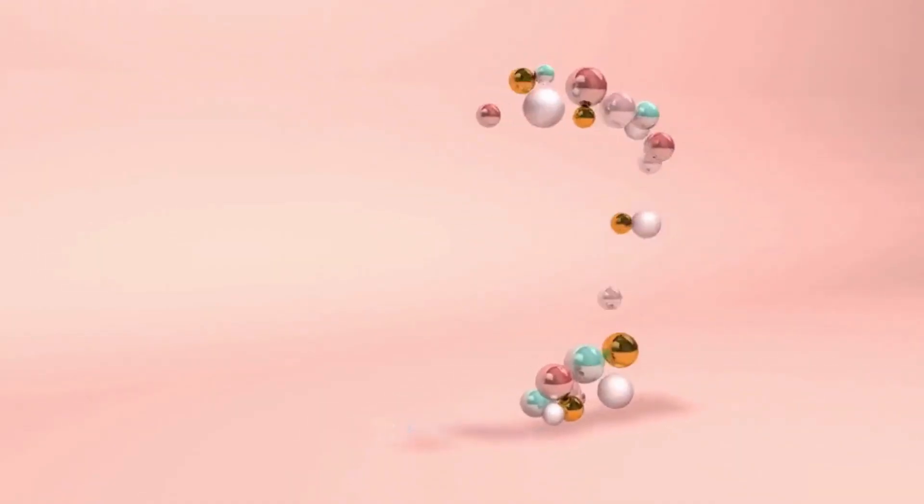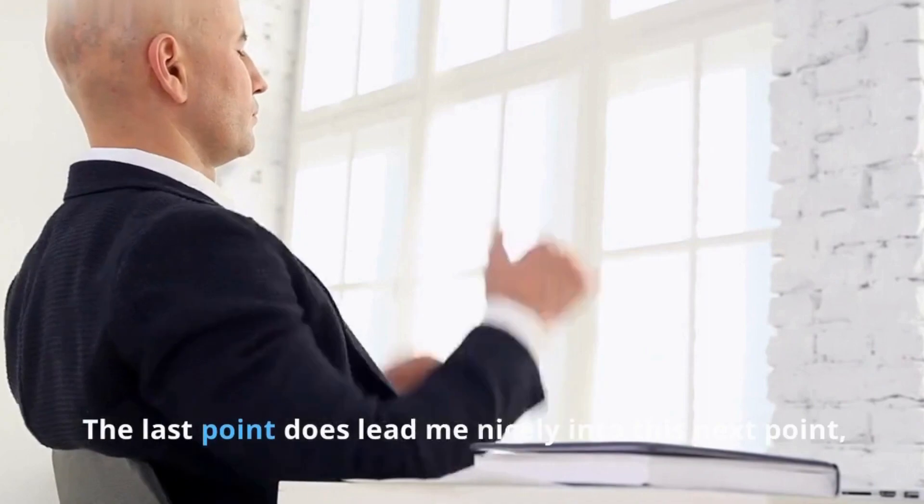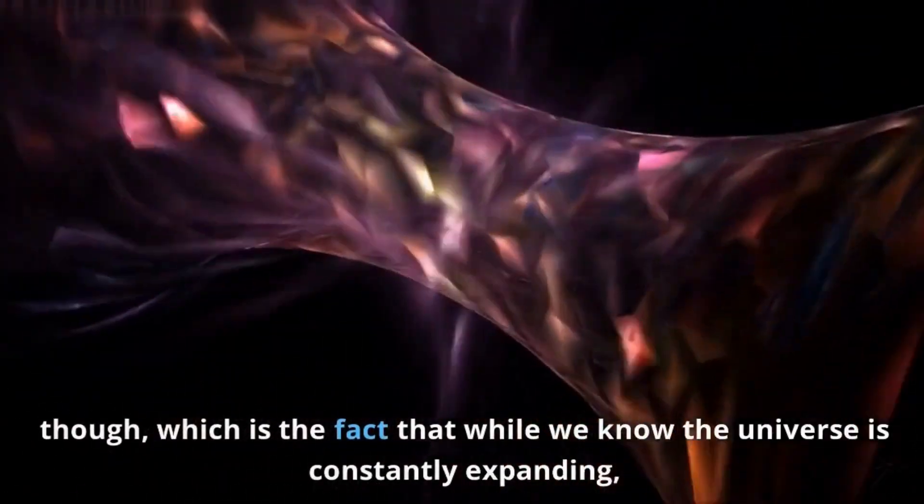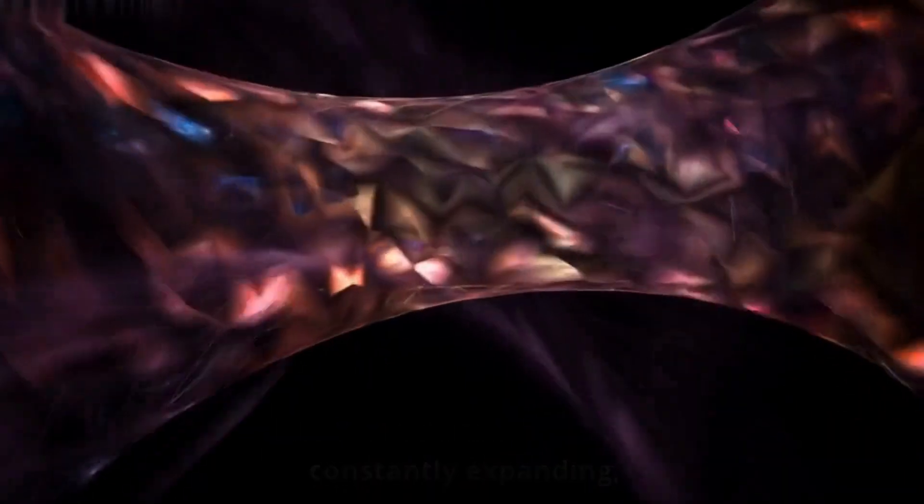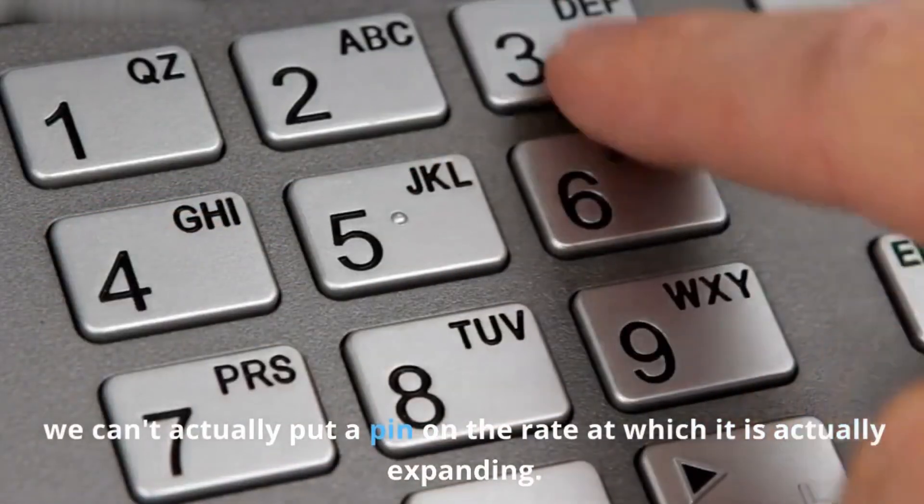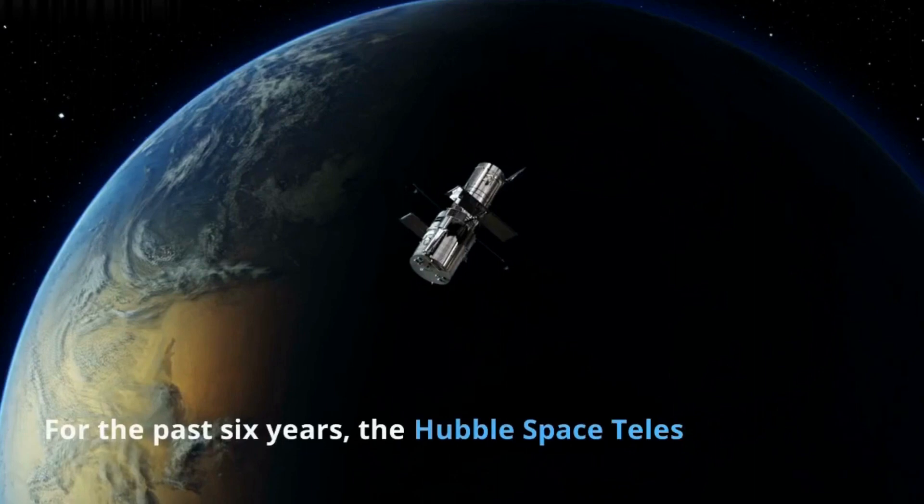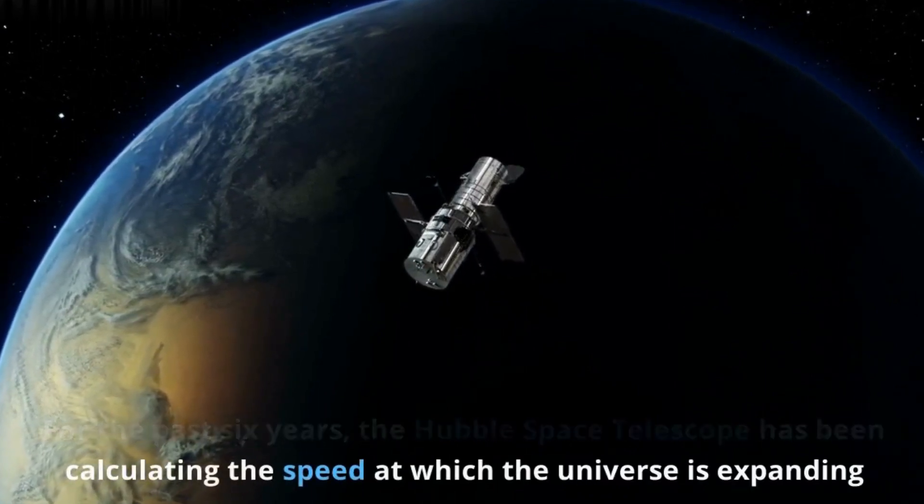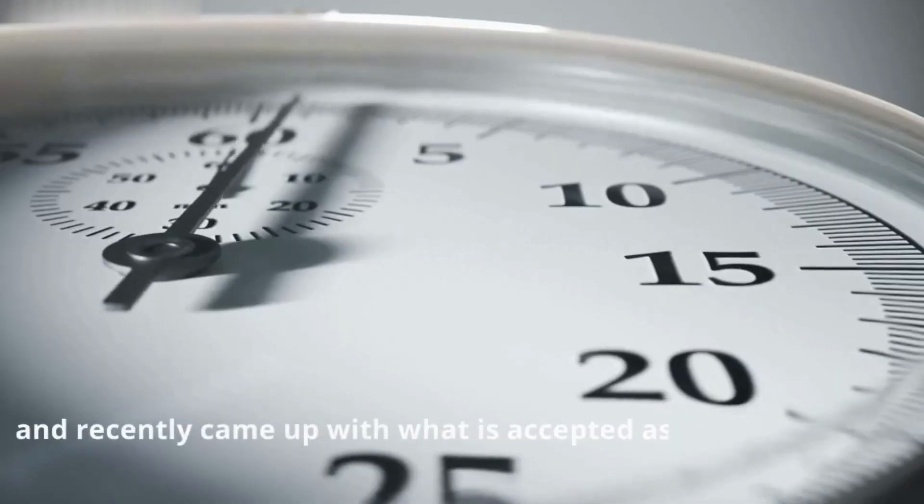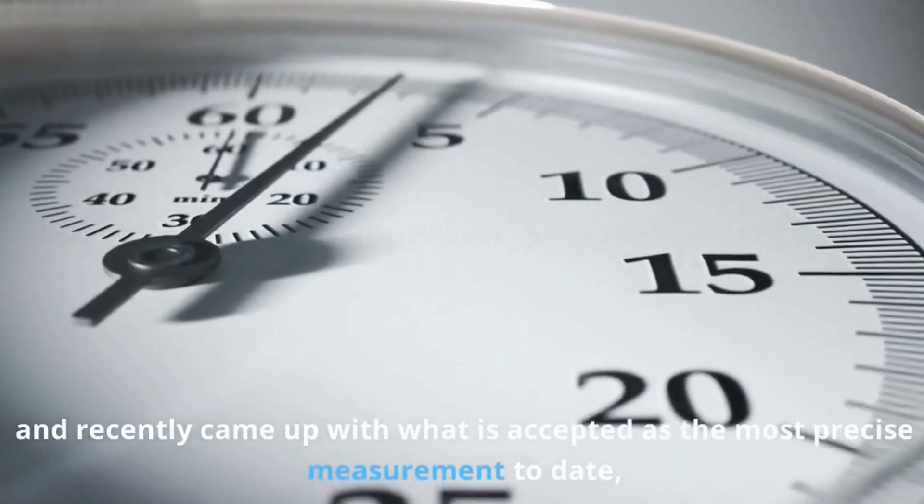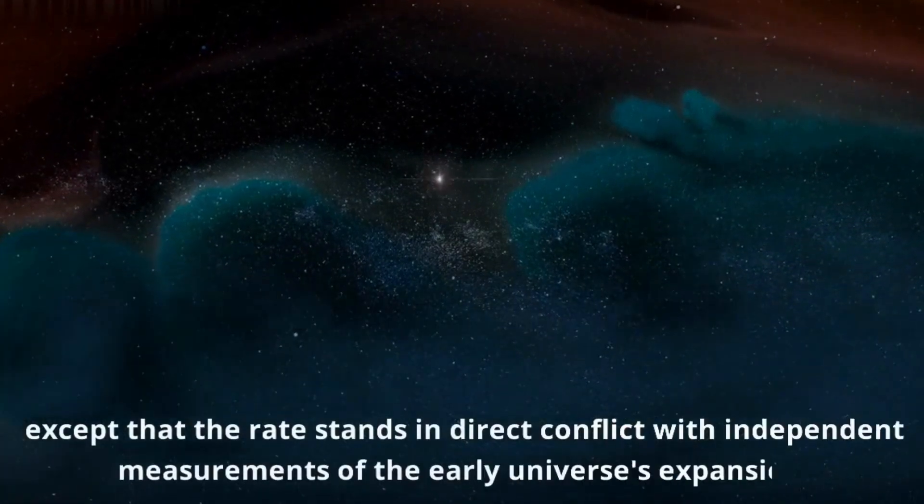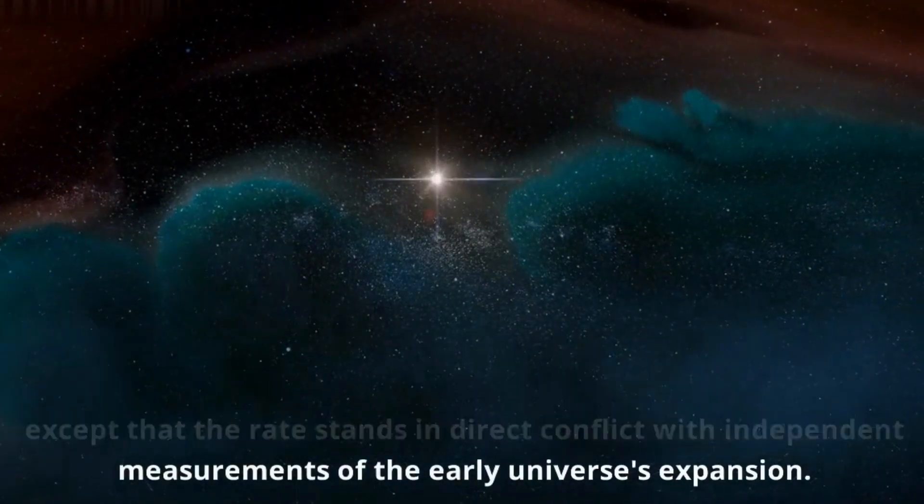Number 7. Expansion. The last point does lead me nicely into this next point. Though, which is the fact that while we know the universe is constantly expanding, we can't actually put a pin on the rate at which it is actually expanding. For the past six years, the Hubble Space Telescope has been calculating the speed at which the universe is expanding, and recently came up with what is accepted as the most precise measurement to date. Except that the rate stands in direct conflict with independent measurements of the early universe's expansion.